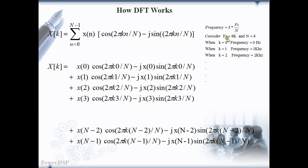Suppose, if our sampling frequency is 8 kilohertz and the number of points are 8, then the sine and cosine waves have the frequencies 0, 1 kilohertz, 2 kilohertz up to 7 kilohertz. So, when k is equal to 0, the frequency is 0, that is DC component.